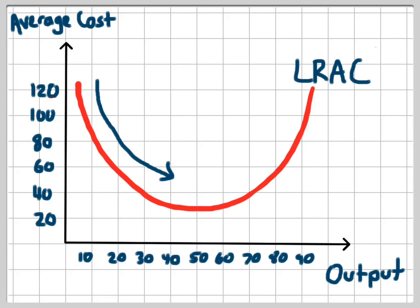When average costs start to rise, then the firm no longer experiences economies of scale. It starts experiencing what we call diseconomies of scale. So in this range of the long run average cost curve, the business experiences diseconomies of scale.